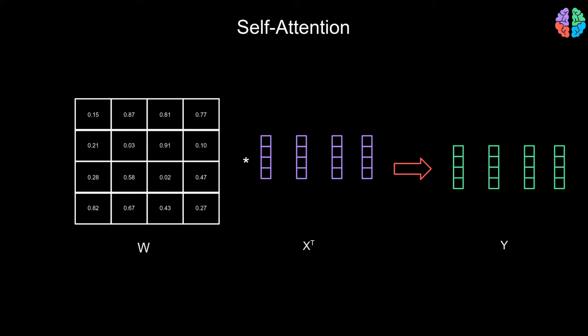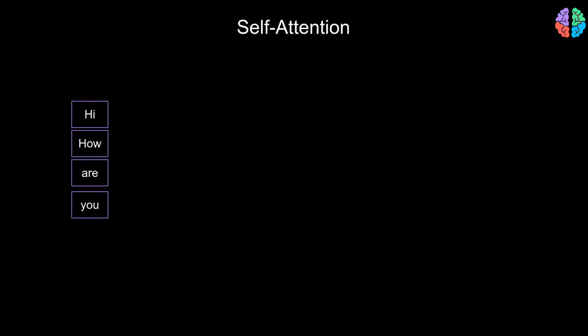By context, what I mean is that each word knows which word is nearby, or rather each word is influenced by the presence of its neighboring word. For example, the presence of 'hi' next to 'how' is known to 'how', and the same applies for other words too.